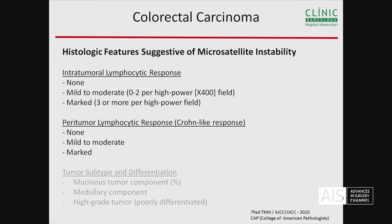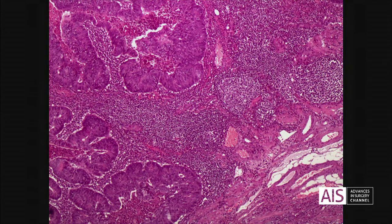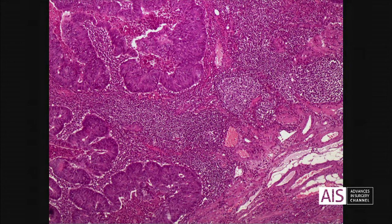We can also report on histologic features suggestive of microsatellite instability. One is intratumoral or peritumoral lymphocytic response. If there is a lot of lymphocytic response in the tumor, we should report it. We can see in this image the cancer cells surrounded by lymphocyte aggregates, which is very suggestive of microsatellite instability.